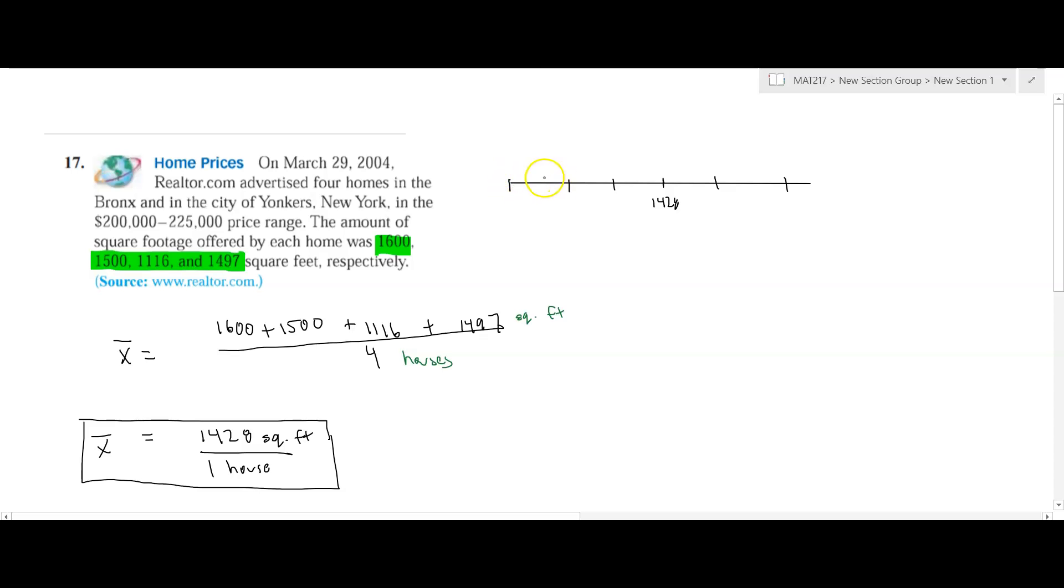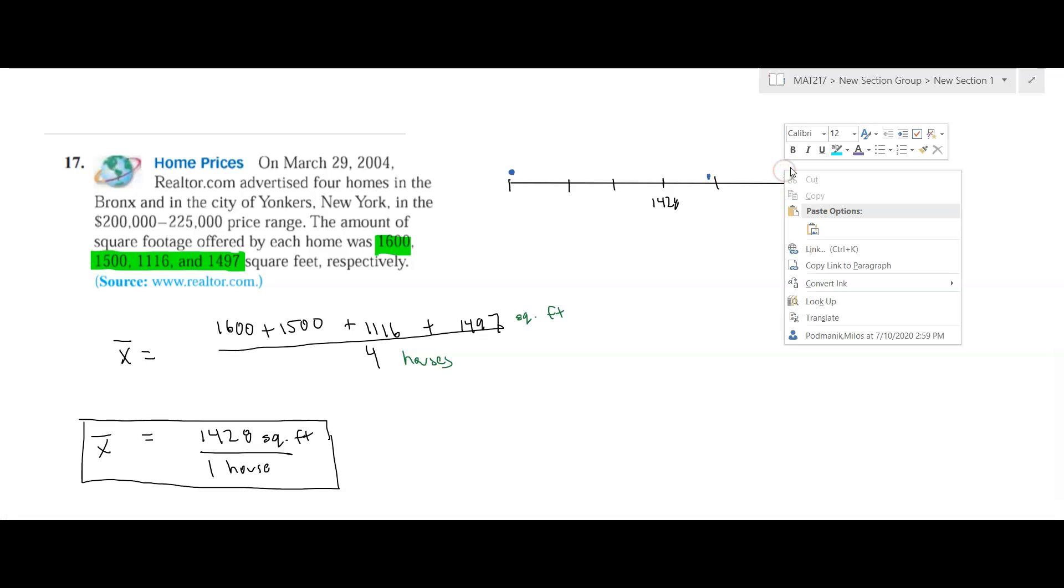1,200, 1,300, so we're right about here on this particular data point. And then we have a home that's about 1,497, which is, let's see, it's going to be close to 1,500, so that's going to be closer over here, and then 1,600 will be right over here, and we have also 1,500.